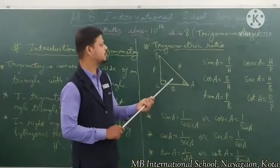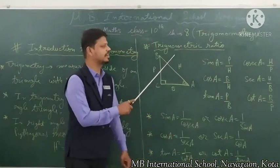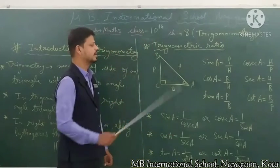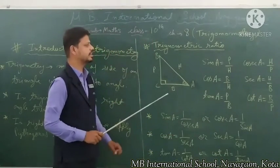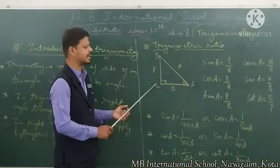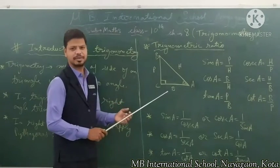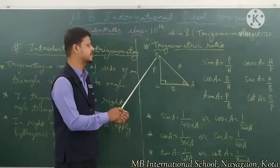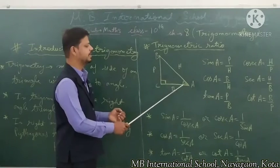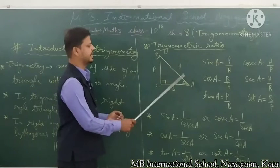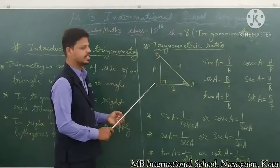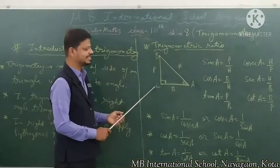Now the next topic is trigonometric ratios — it is a very important topic. Consider a right angle triangle ABC, where angle C is 90 degrees.